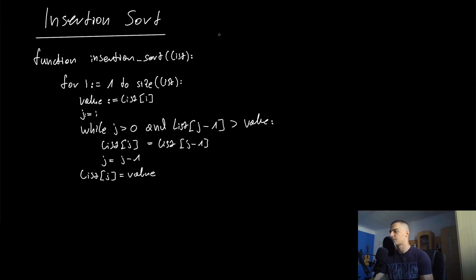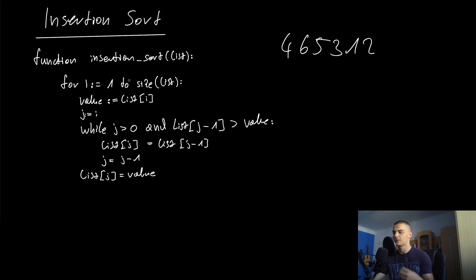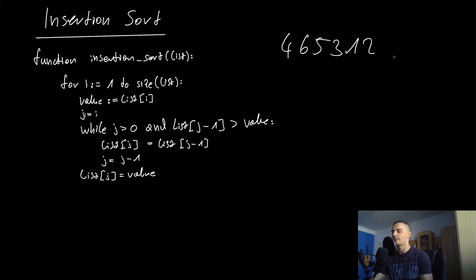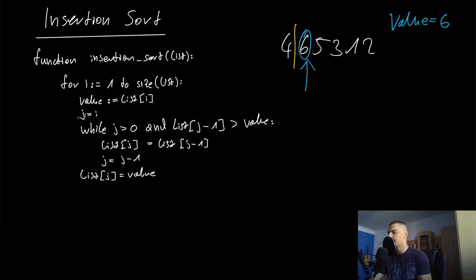Now let's look at the pseudocode. We have the insertion sort function definition where we pass a list — let's go with the list four, six, five, three, one, two. We pass this list to the function. The first loop runs from one to n, the size of the list. We start at one because we already said we have this boundary — sorted on one side, unsorted on the other — so we're not going to look at element zero. The variable 'value' is set to the element at the current index i.